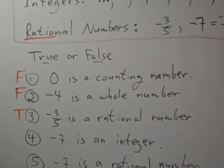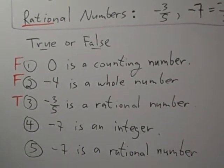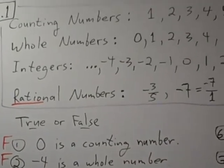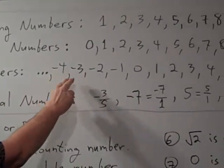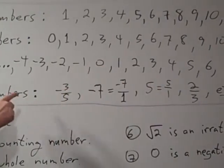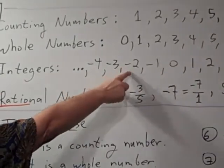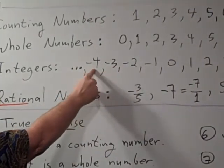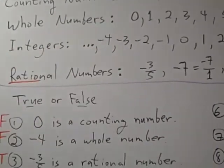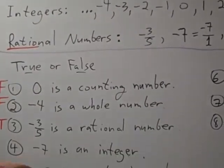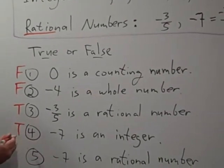In problem number 4, they say negative 7 is an integer. If you look at the integers, they're all the negative whole numbers, the positive whole numbers, and zero. So you've got negative 2, negative 3, negative 4 — those three dots mean negative 5, negative 6, negative 7, negative 8. Negative 7 is one of those, so negative 7 is an integer. That's true.